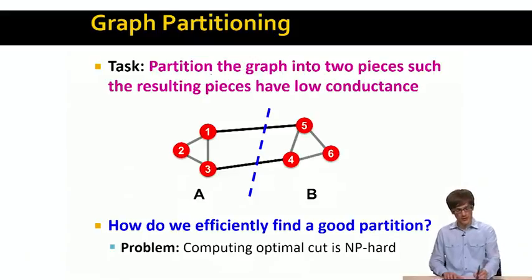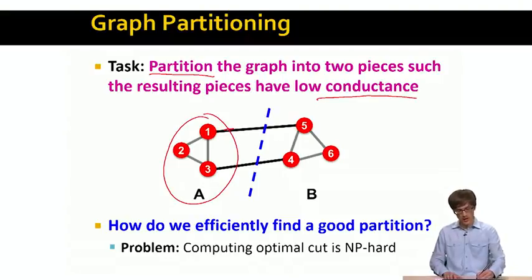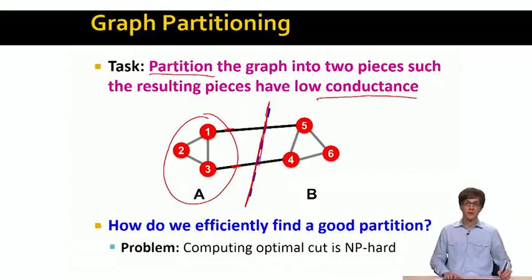The way we will think about this is we will define the problem as: we want to partition the graph into two pieces such that the resulting pieces have low conductance. We have already defined the notion of conductance, which intuitively can be thought of as, for a given set of nodes, how many edges are pointing outside this set versus how many edges are inside the set. In this particular case, one good bisection of the graph would be the blue line here. So now the question is, how do we efficiently find such a good partition? I give you a graph and ask you, what is the best partition into two pieces such that the conductance of each piece is as small as possible, which means we find good communities or good clusters.